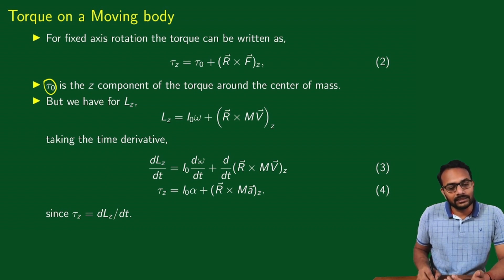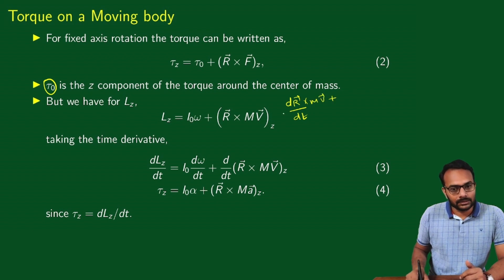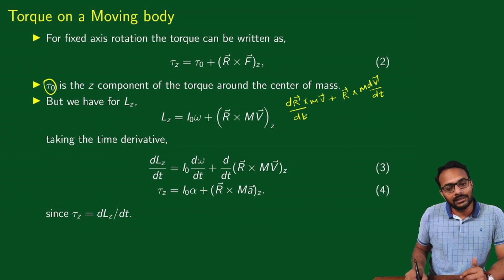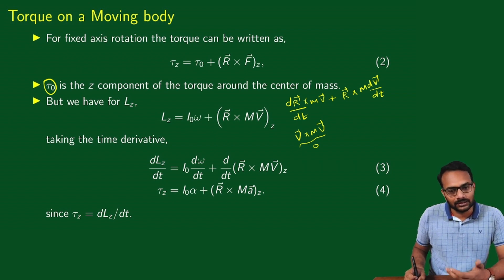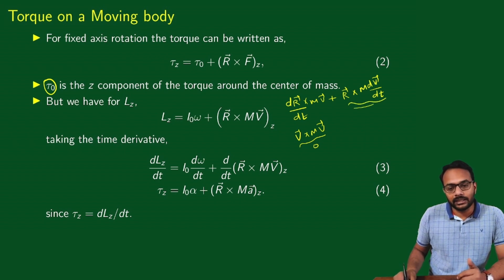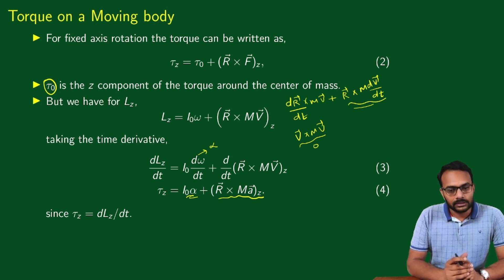I0 is constant, so the first term gives I0 times d-omega/dt. For the R cross Mv term, we use the product rule, giving dR/dt cross Mv plus R cross M*dv/dt. Since dR/dt equals V, the first term is V cross Mv, which is zero because both vectors are in the same direction. So we are left with I0*alpha plus R-vector cross M*A-vector, where A is the acceleration of the center of mass.